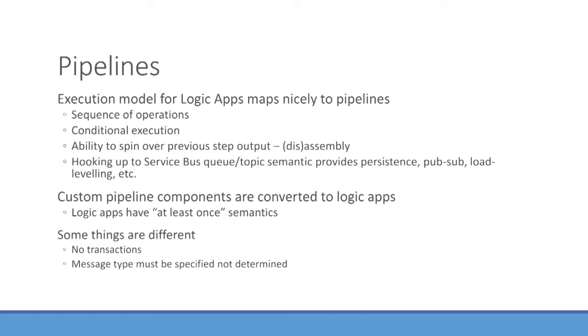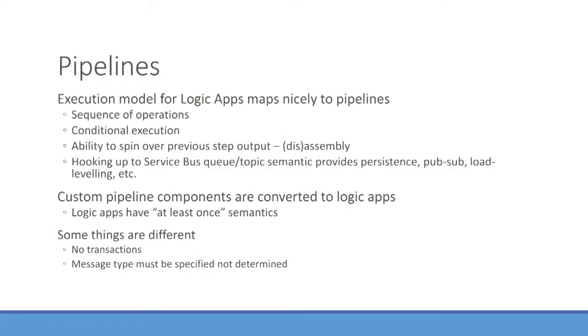Looking a bit deeper, the execution model for Logic Apps is very similar conceptually to what you can do in BizTalk Server. There are some differences — you don't have transactions, for example — but if you don't need that, it maps quite nicely. Custom pipeline components could be lit up as API apps; you could convert those and plug them into that Logic App flow that runs things sequentially, chaining them together. Some things are different — things like message types, and some of the way the API apps work, because BizTalk Server works out the message type from the root node namespace whereas you specify that stuff explicitly with an API app. But it all kind of works.